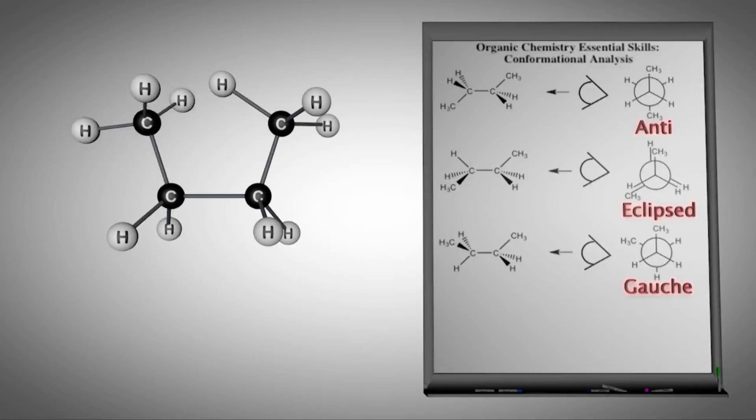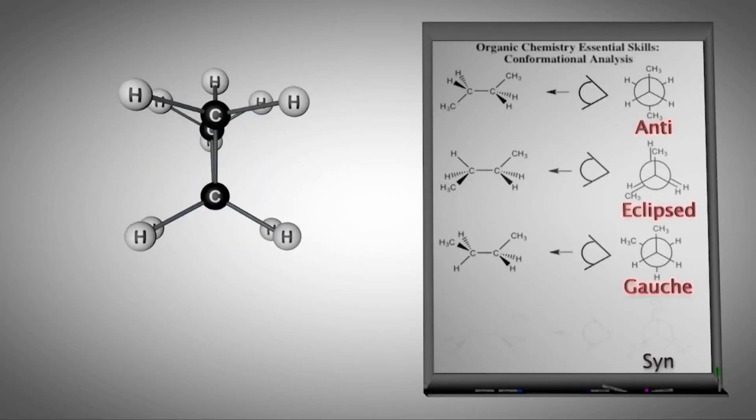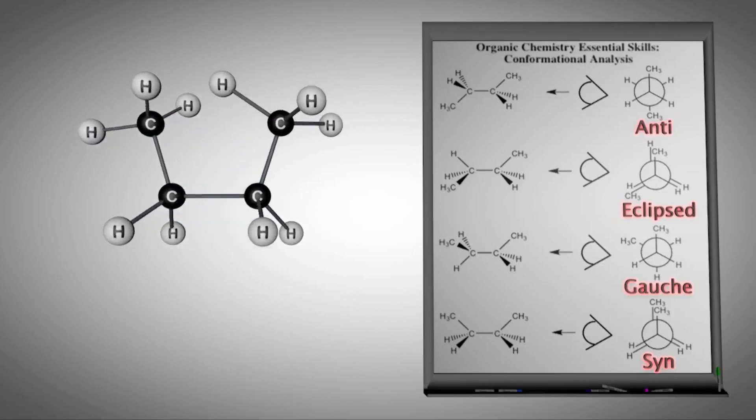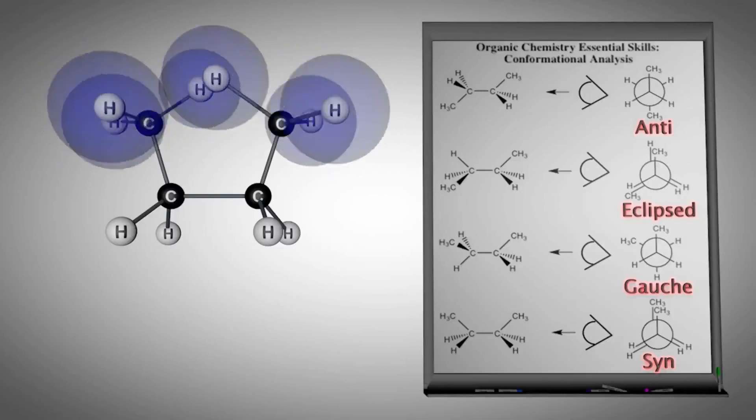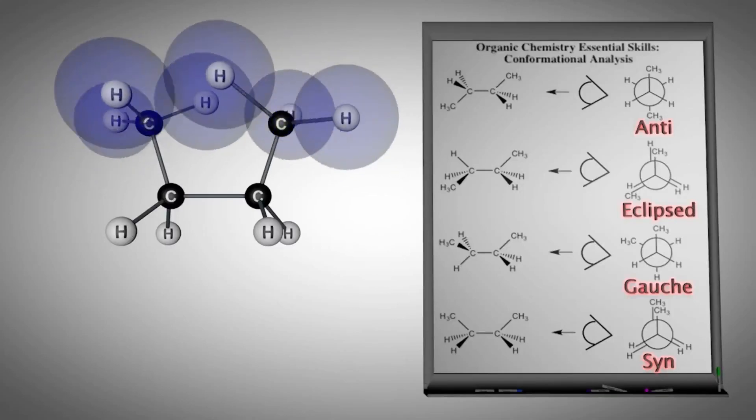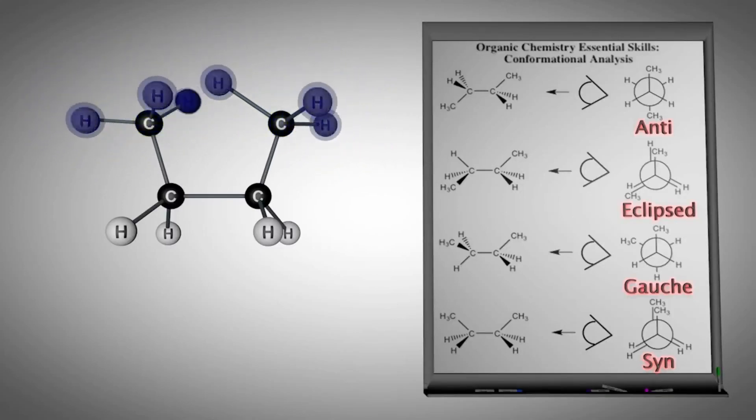When another 60-degree rotation occurs, a new type of eclipse conformer is formed, called the syn-conformation, which is the highest-energy conformer, due to both methyl groups attempting to occupy the same space. If we place the electron density around each hydrogen atom of the methyl groups, this high-energy steric effect is clearly visible.